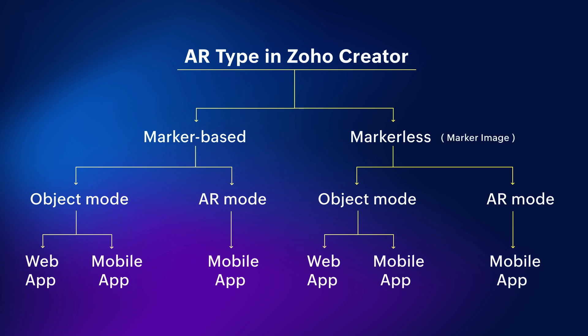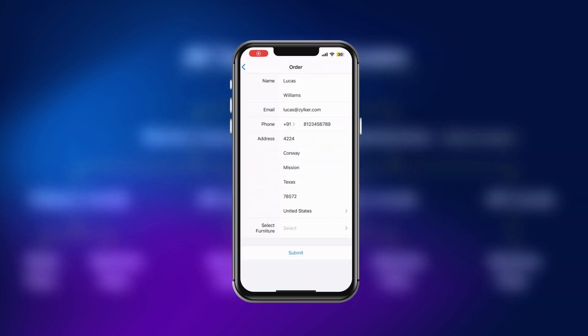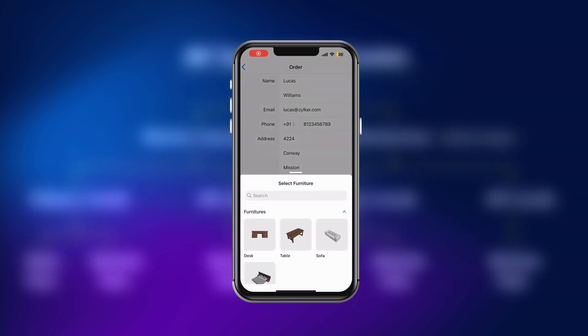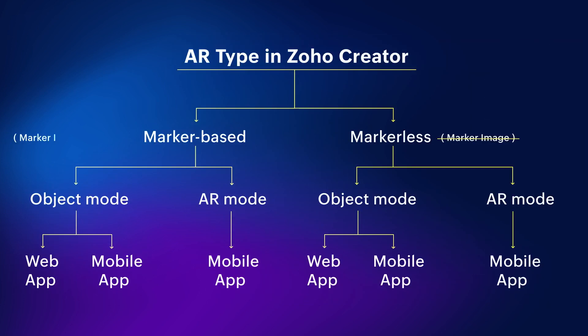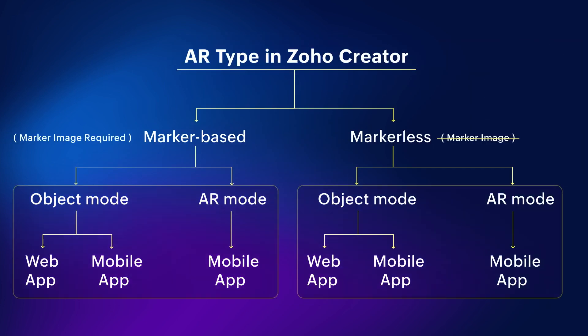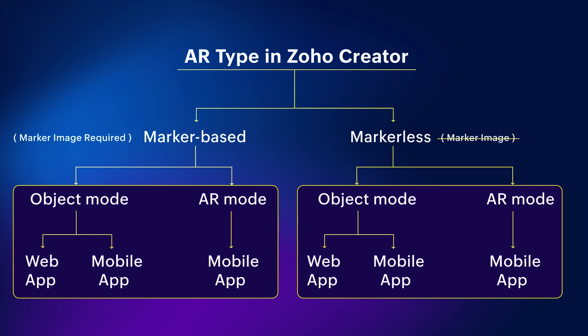On the other hand, markerless AR does not require any marker image to trigger the 3D model. Instead, it can directly be chosen from a drop-down field. This is the only difference between marker-based and markerless AR. The other functionalities and capabilities are the same for both AR types.